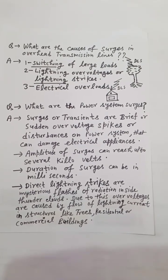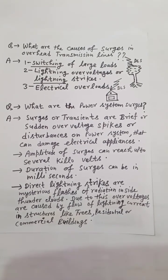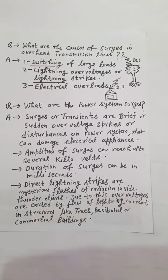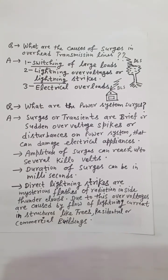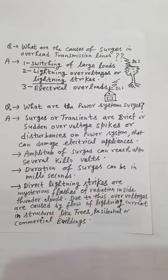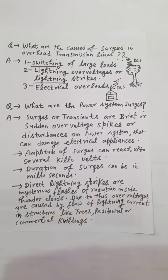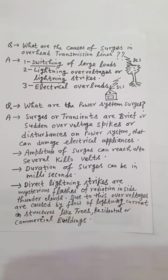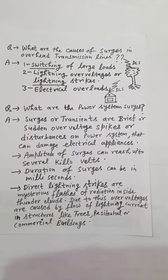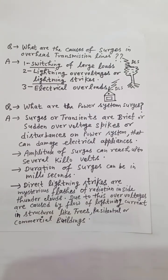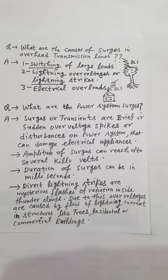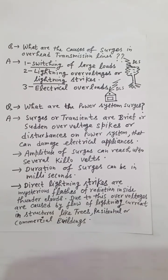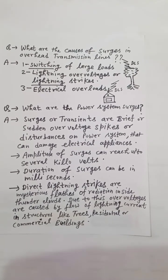The amplitude of surges can reach up to several kilovolts, and the duration of surges can be in milliseconds. Direct lightning strikes are mysterious flashes of radiation inside thunder clouds.